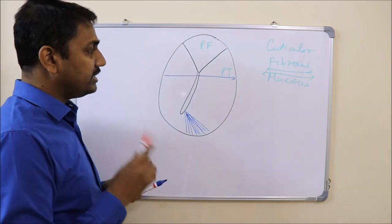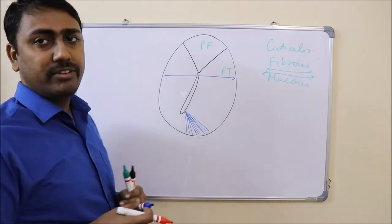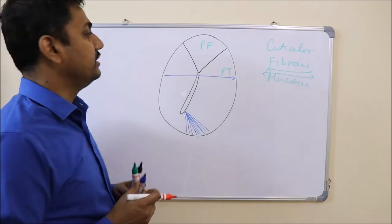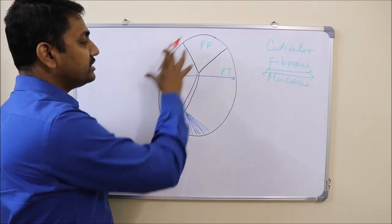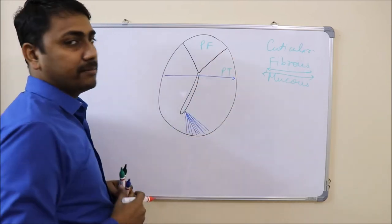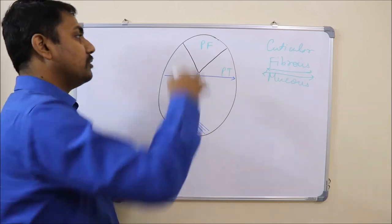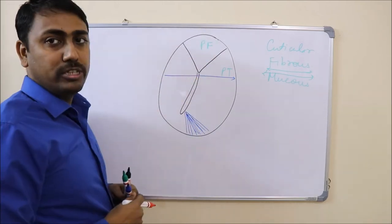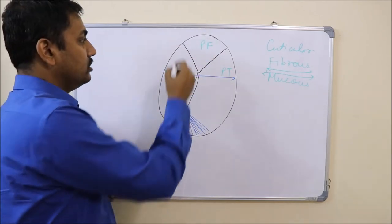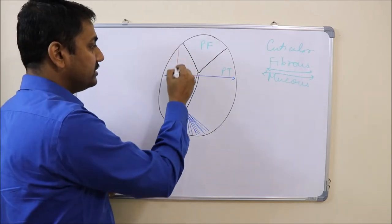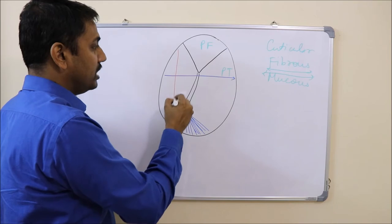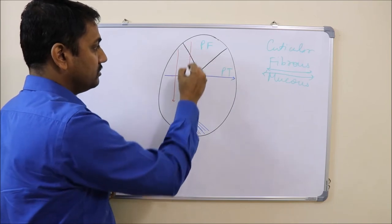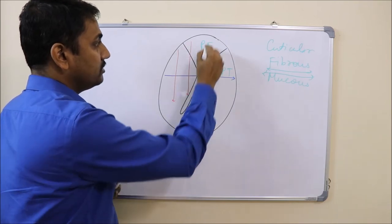Another important thing to keep in mind is that the blood supply of the tympanic membrane runs from above downwards — all the blood vessels are coming from above downwards.